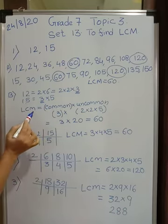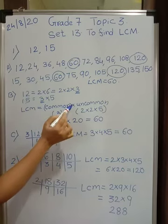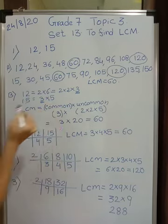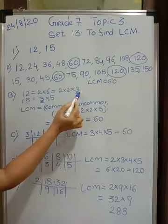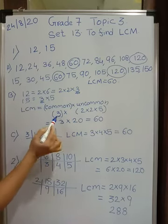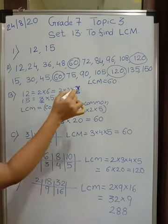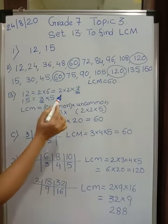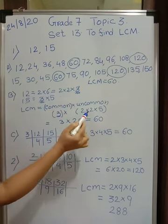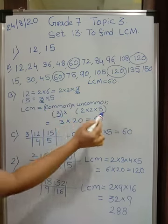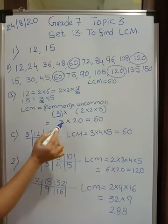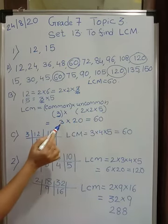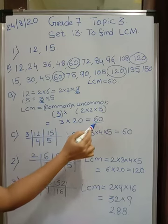Now how to find LCM? You write all the common factors once, then the uncommon factors. From 2, 2, 3 and 3, 5 — the number 3 is common to both, so I write 3 only once. The remaining uncommon factors are 2, 2, and 5. So I write 3, then 2, 2, and 5, and carry out the multiplication: 2 twos are 4, and 4 fives are 20, and 3 × 20 gives LCM as 60.